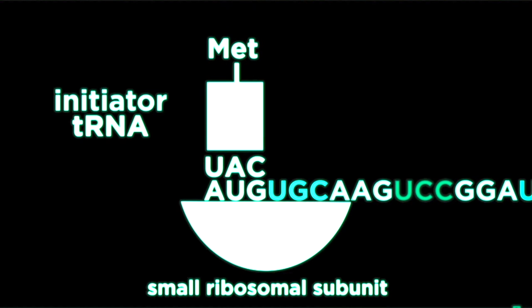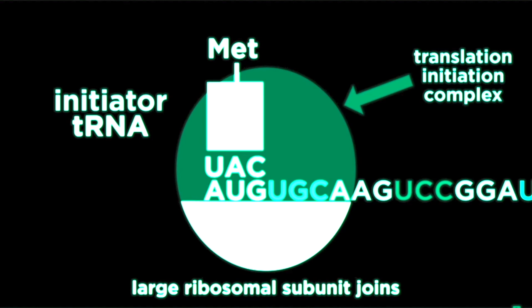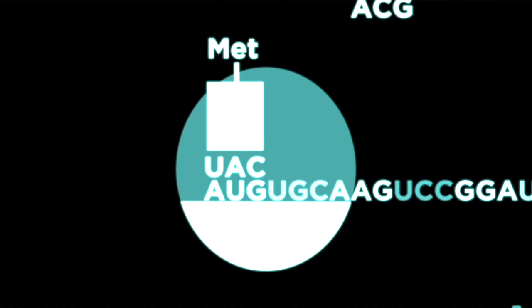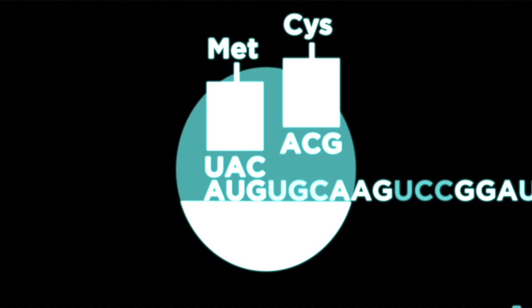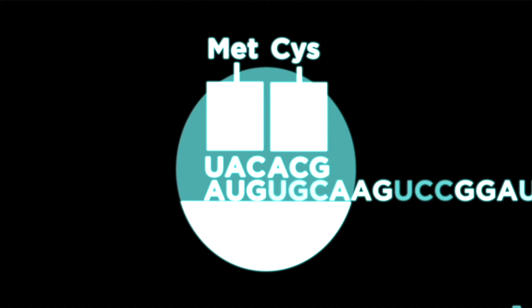Once the mature mRNA has left the nucleus, translation can begin. Translation begins when a small ribosomal subunit bonds with the mRNA. At this point, a tRNA or transfer RNA then comes into the picture. The large ribosomal subunit appears and binds to form the translation complex. Complementary base pairing then occurs in which the codons of the mRNA are bonded with the corresponding anticodons of the tRNA, which has an amino acid with it.